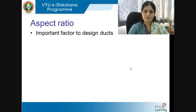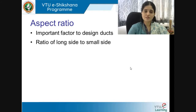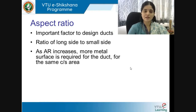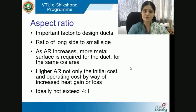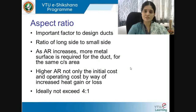Aspect ratio is an important factor in duct design — it is the ratio of the long side to the short side. As aspect ratio increases, more metal surface is required for the same cross-sectional area, increasing both initial and operating costs through increased heat gain or loss. Ideally the aspect ratio should not exceed 4:1, with 4 as the long side and 1 as the smaller side.